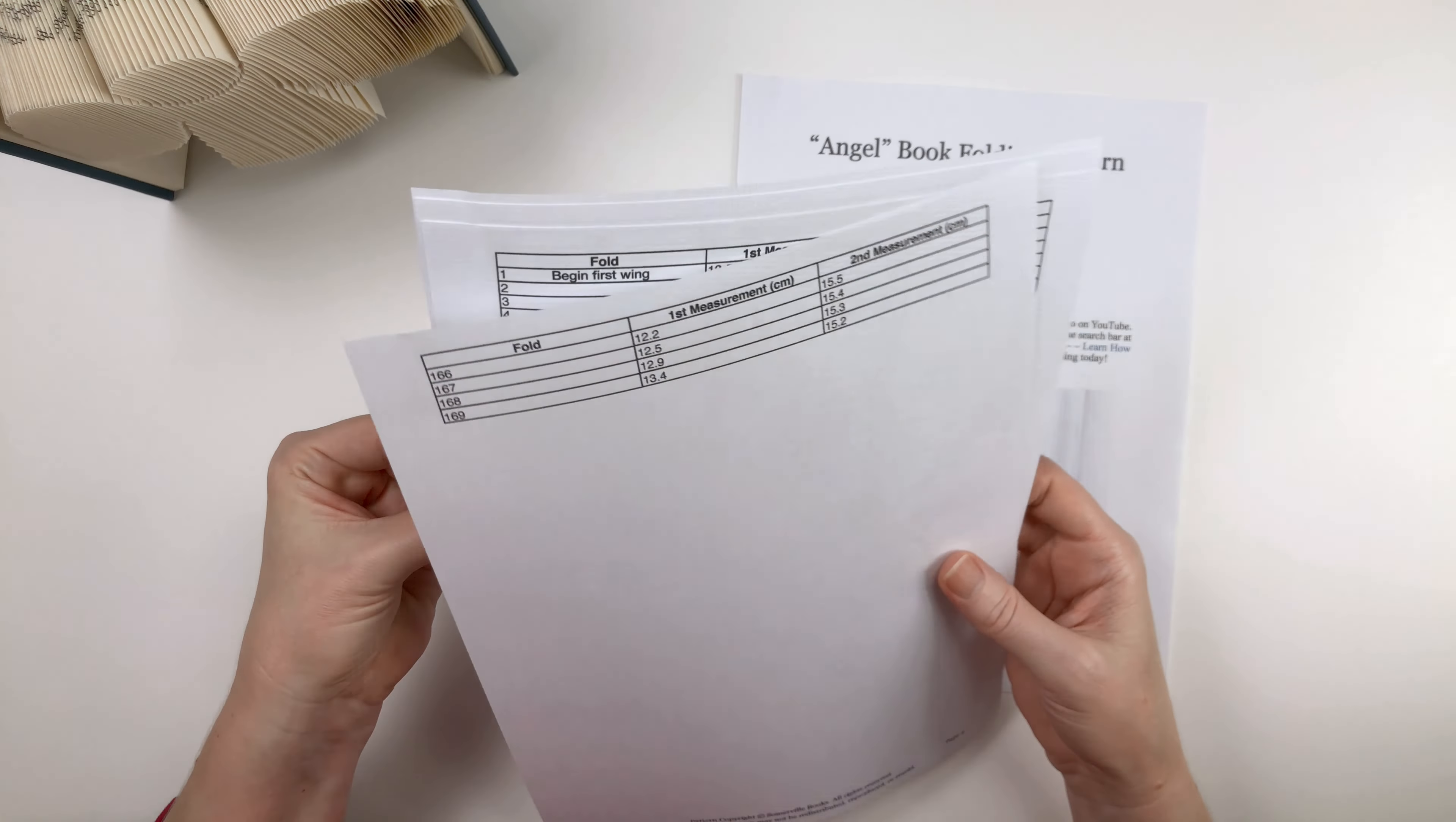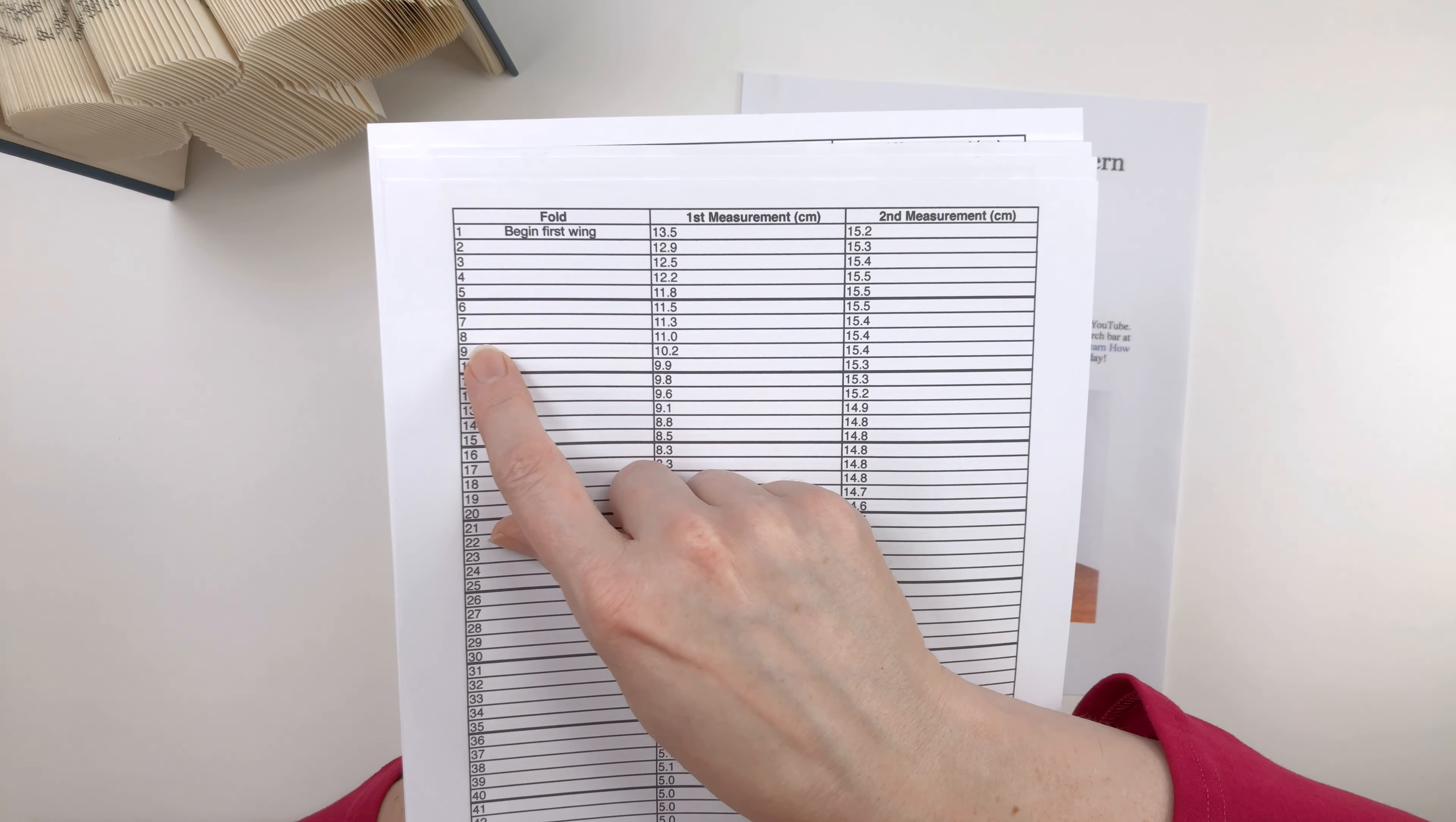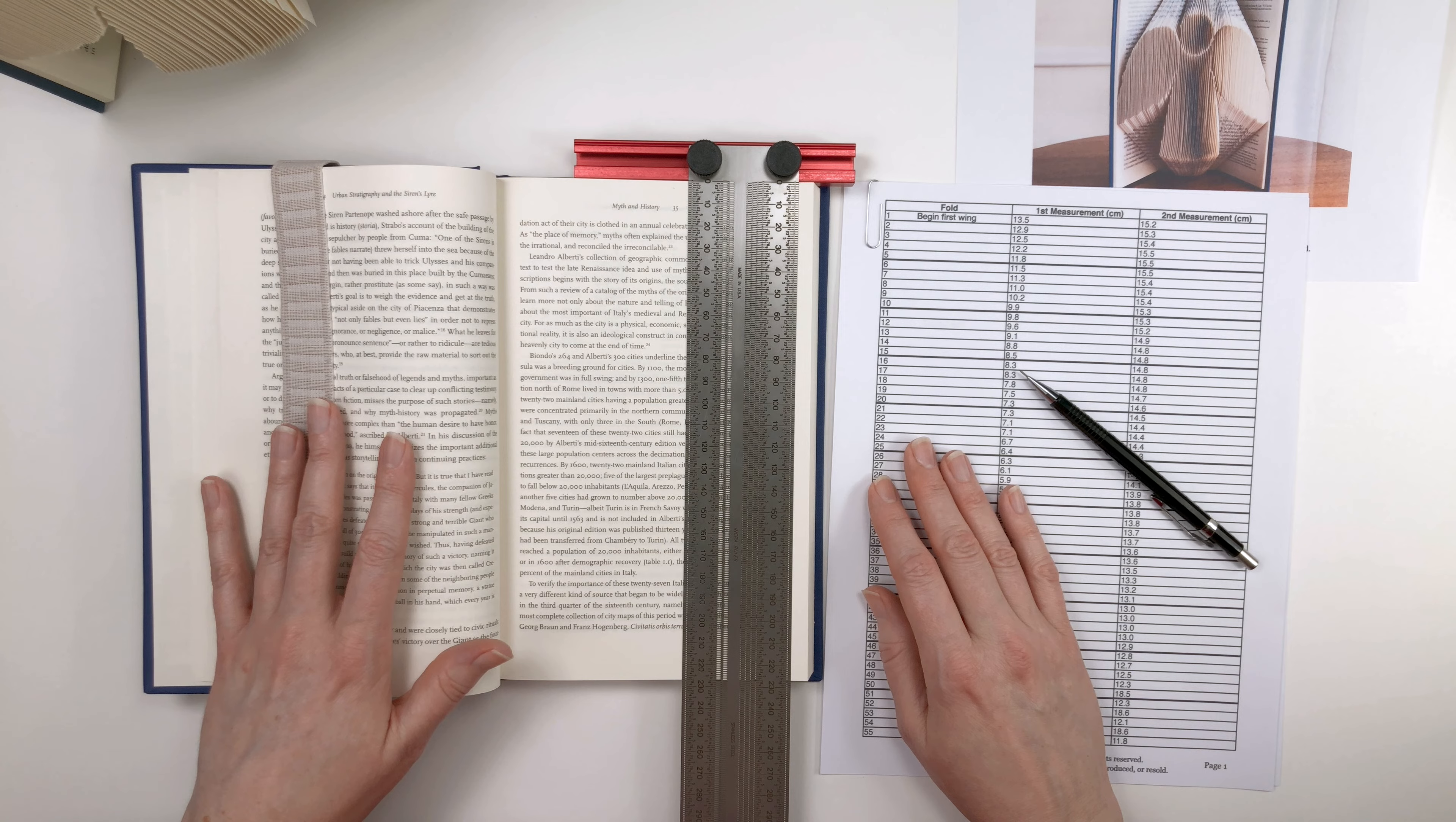Let's go back to the first page. And let's do these first five folds together. We'll measure, mark, and fold them. That will get you off to a good start. And then you'll be able to see how the first wing of the angel begins. I've got my book here ready to go along with the pattern. And I like to wrap a piece of elastic around the pages that I am not folding. It acts as a third hand just to hold them down and keep them out of the way.